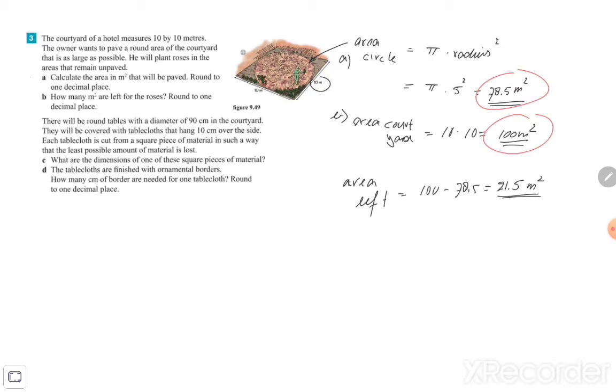Exercise C: Let me just do that. There will be round tables with diameter of 90 centimeters in the courtyard. They will be covered with tablecloths that hang 10 centimeters over the side. Each tablecloth is cut from a square piece of material in such a way that the least possible amount of material is lost. What are the dimensions of one of the square pieces of material?